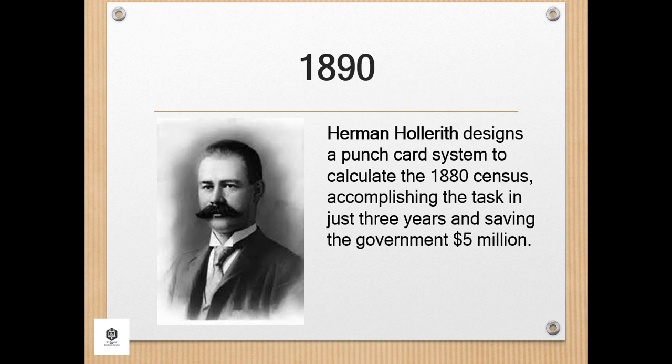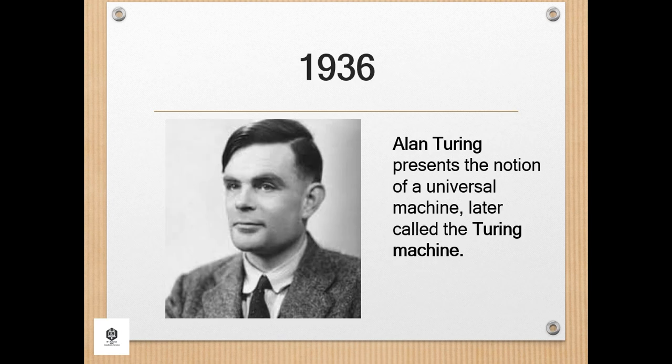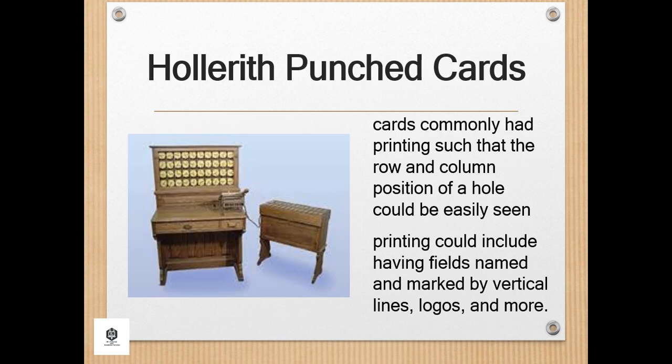During 1890, Herman Hollerith designed a punch card system to calculate the 1880 census, accomplishing the task in just three years and saving the government $5 million. He established a company that would ultimately become IBM. The Hollerith punch cards used for the 1890 U.S. census were blank; following that, cards commonly had printing such that the row and column position of a hole could be easily seen, including field names, vertical lines, logos, and more.